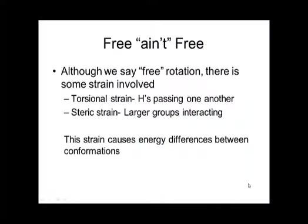Although we say there's free rotation around the carbon-carbon single bond, in actuality there's some strain involved. There are two types of strain: torsional strain, which is the strain of hydrogens passing one another, and steric strain, which occurs when groups get larger and start interacting with one another — they don't like being close, causing a steric interaction.